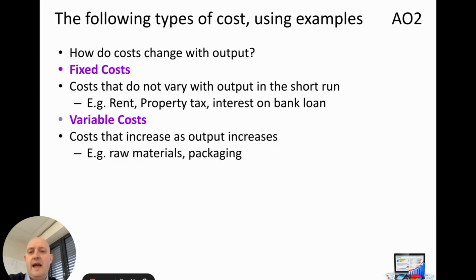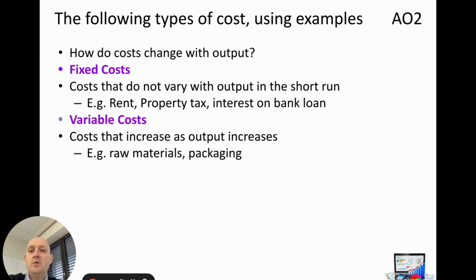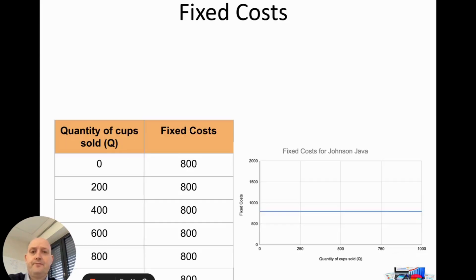Variable costs, on the other hand, are costs which increase as we produce more. The best example is raw materials — as we produce more of a product, we use more raw materials and need to buy more, so the cost goes up. Another example is packaging: as we produce more products, we need more packaging, but this would only apply to goods.